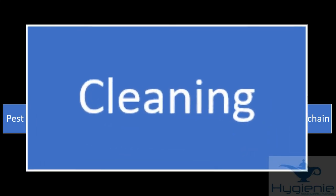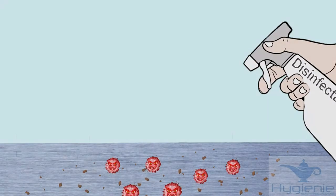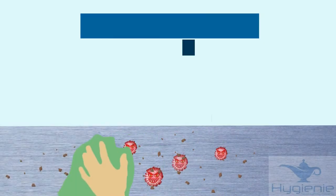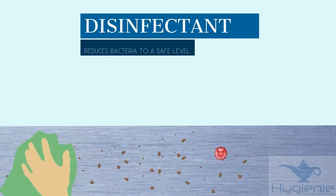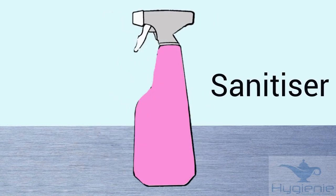Next we'll take a look at cleaning. A detergent is a chemical which removes soil and grease. A disinfectant reduces bacteria to a safe level but it's not designed to remove soil and grease. A detergent and a disinfectant combined is called a sanitiser.